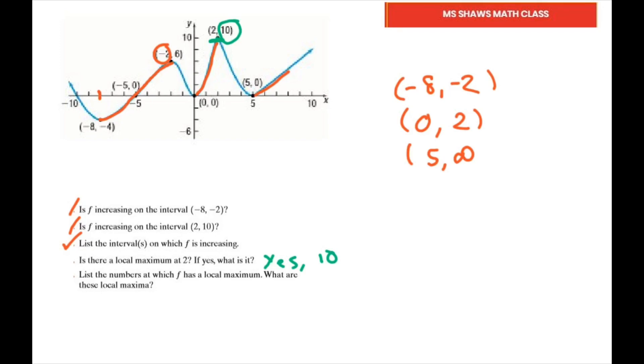List the numbers at which F has a local maximum. Local maximum means your top points here. We have local maximums at x = -2 and x = 2. What are these values? The one at x = -2 is 6, and the one at x = 2, we already did, is 10.